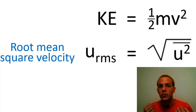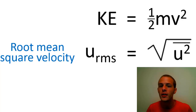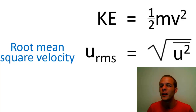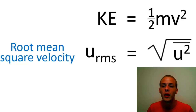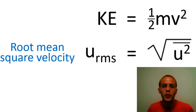Unfortunately, U-squared-bar is very difficult to measure directly, so we're going to have to derive another expression for the root mean square velocity that gets rid of that U-squared-bar term, in order to find out, on average, how fast these particles are moving.